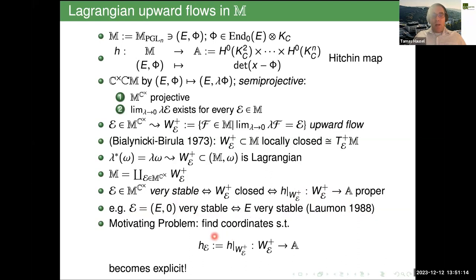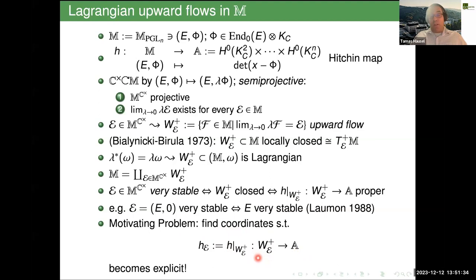In the case when the Higgs bundle was actually already a stable vector bundle with zero Higgs field, being very stable is exactly the same notion that Laumon in 1988 defined as a very stable bundle. He said the bundle is very stable if the only nilpotent Higgs field on it is the zero one. That turns out to be equivalent with this assumption about the upward flow from that point being closed.